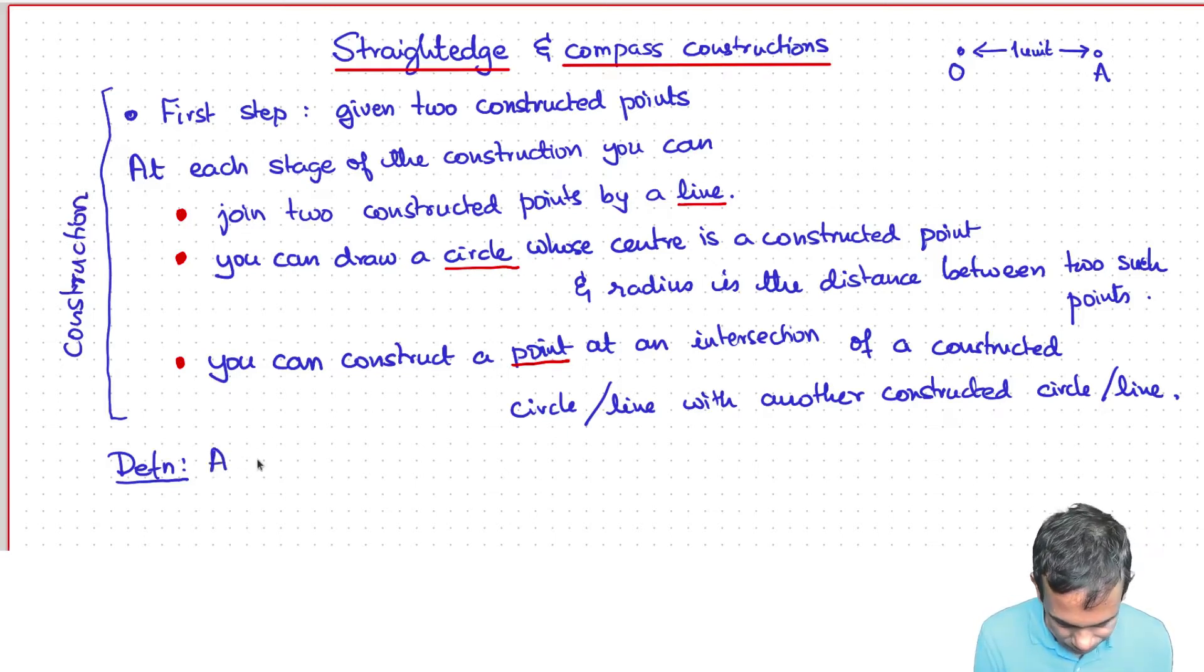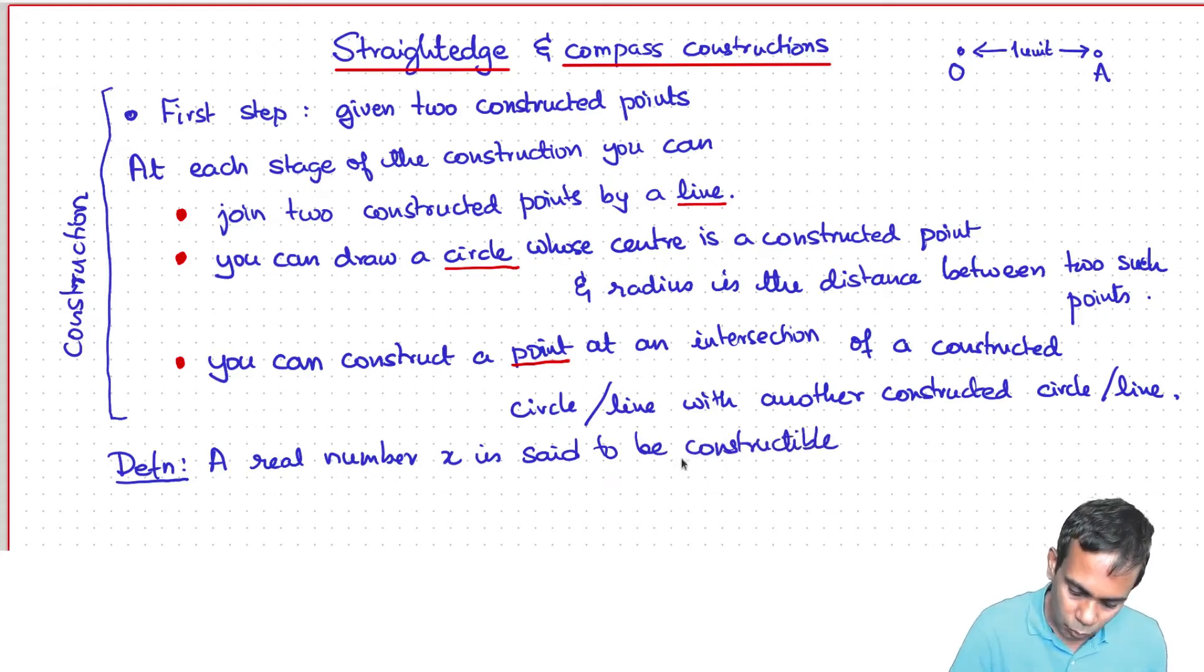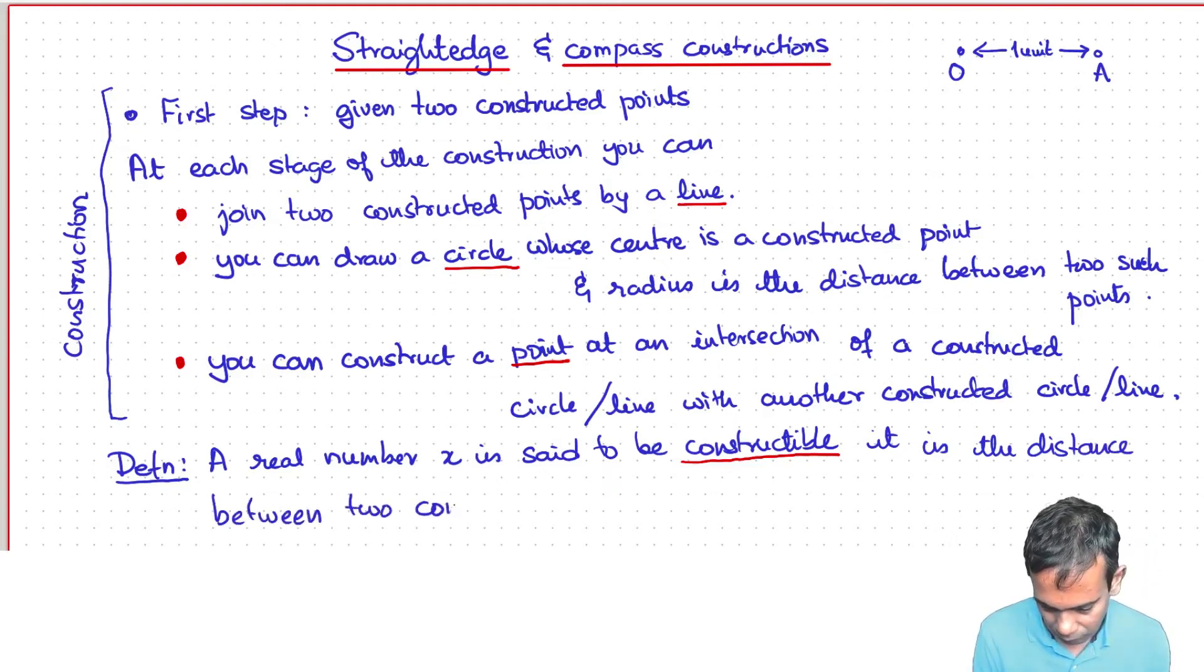Okay. So the definition is a real number x is said to be constructible, and you can ask which real numbers are constructible? And that's the question we are going to answer.